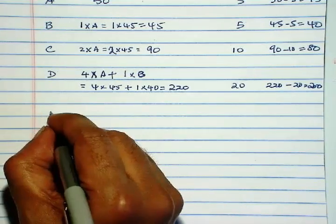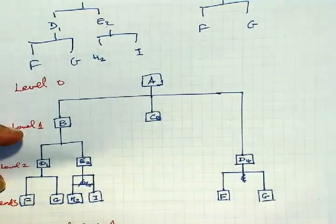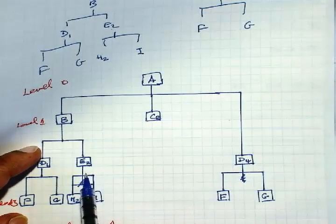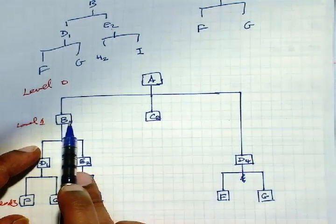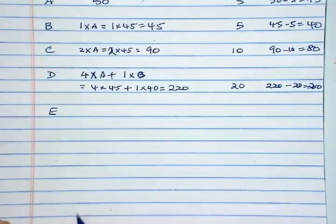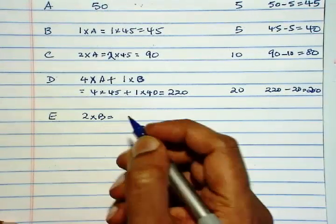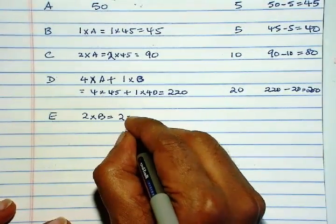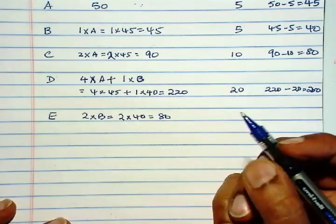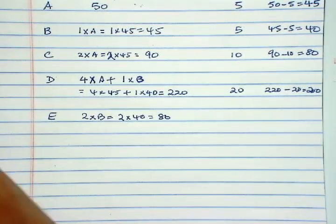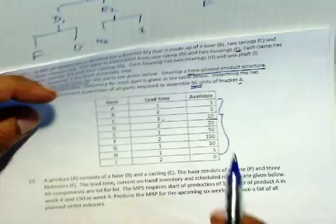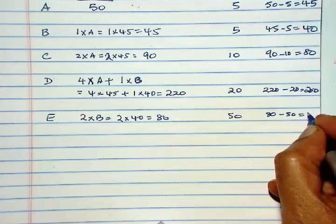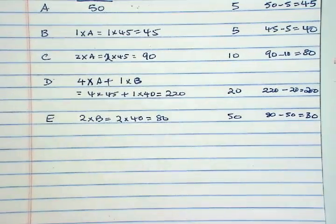Next is E. So we have E. We need 2 units of E for each B. So 2 times B. And that is equal to 2 times - again, remember net requirement is what you have to use. So 2 times 40 is 80. Now, how many units of E is already available? 50 units are available. So 80 minus 50 is 30.